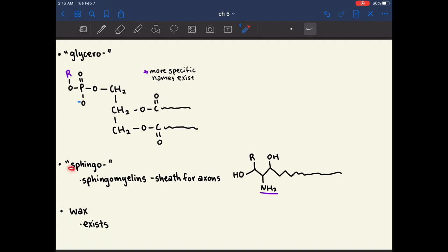If something has a sphingo prefix, that means they have a sphingosine backbone. How I would go about recognizing this is that if your fatty acid chain has some nitrogen hanging off of it near the head, that's probably a sphingolipid.